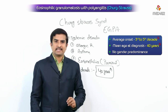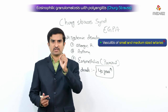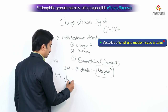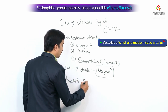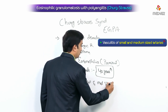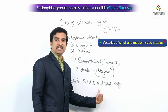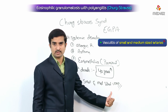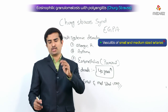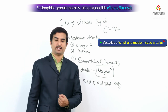EGPA is classified as a vasculitis of small and medium sized vessels, particularly arteries. Although the vasculitis is not often apparent in the initial phases of the disease, in later findings you will clearly see vasculitis as an important feature.